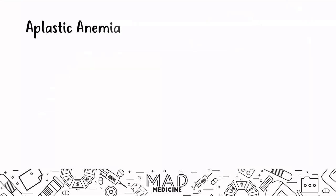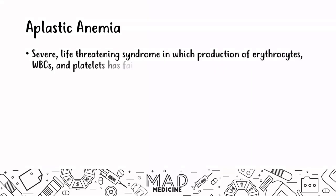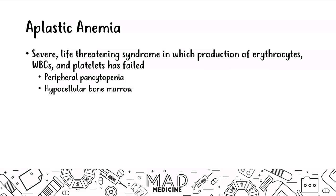Aplastic anemia is a severe, life-threatening syndrome in which patients have a lack of production of white blood cells, red blood cells, and platelets — all have failed. You'll see peripheral pancytopenia and a hypocellular bone marrow. A helpful mnemonic: aplastic anemia is like a plastic bone — just as a plastic bone has no bone marrow, the bone marrow here doesn't function properly. This is a very severe condition.